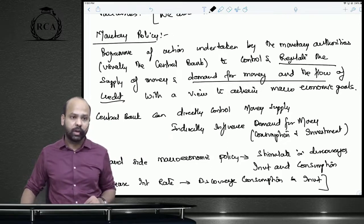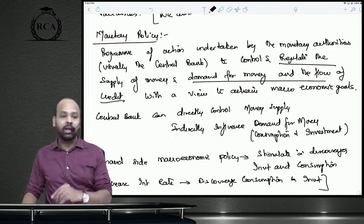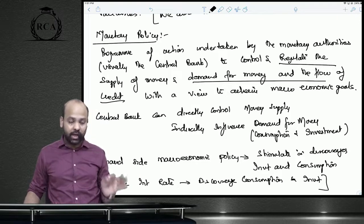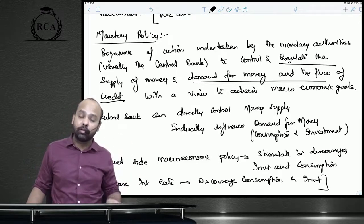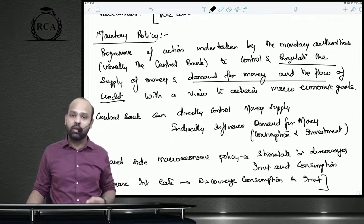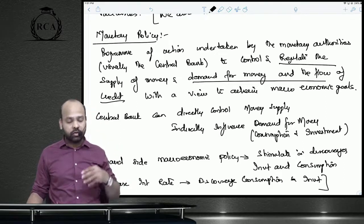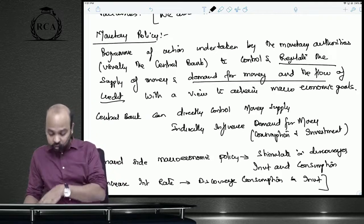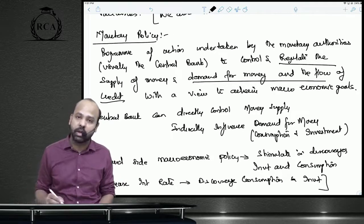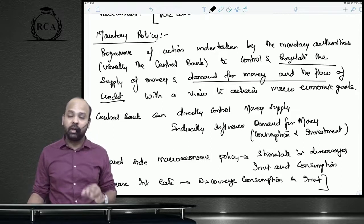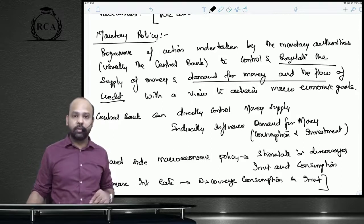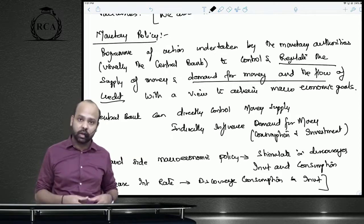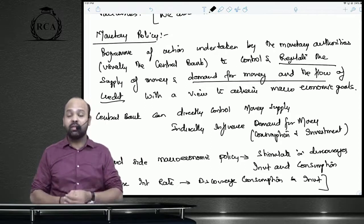The central bank can directly control money supply — we've learned about monetary base, CRR, and SLR — and can also indirectly influence the demand for money. Monetary policy is a demand-side macroeconomic policy because it tries to influence the total consumption and investment activity of a country.